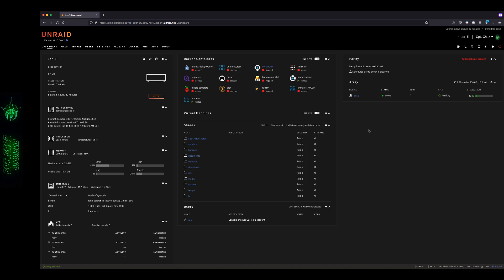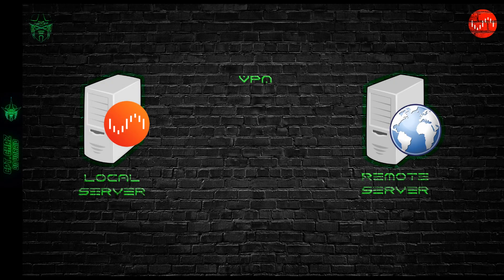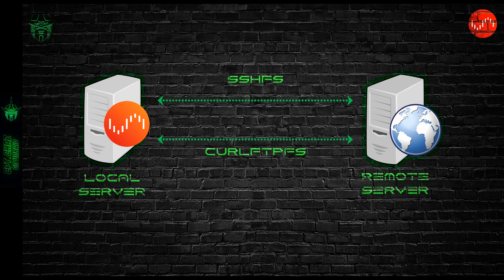Let's discuss one hypothetical use case where having a remote file system mounted onto our local system would be very convenient. Suppose I've got a basic file server in a remote location. I've already set up and pushed my SSH keys to the remote system per my previous video, and I want to run an rsync backup of a local share to my remote share. If I have a VPN in place I can easily mount a remote share using the unassigned devices plugin, but if I don't have a VPN I can still run this backup using SSHFS or curlftpfs to sync local files to a remote share.